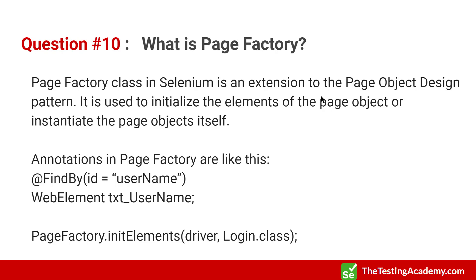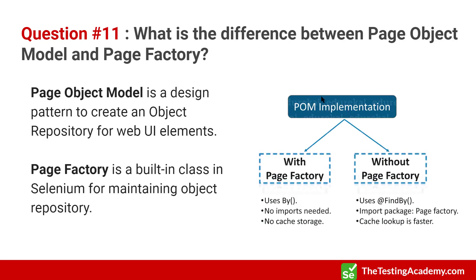Interviewers may also ask the difference between Page Object Model and Page Factory. Page Object Model is a design pattern to create an object repository, whereas Page Factory is a built-in class used to maintain the object repository. Without Page Factory, you use FindBy with an import class and cache lookup is faster. With Page Factory, you use By, no import is required, and there is no cache storage.